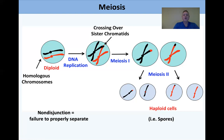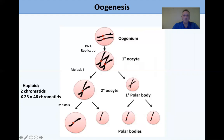Non-disjunction events are due to a failure to properly separate chromosomes. As a consequence, some cells at the end may have more chromosomes than others. Whenever you don't have the proper number of chromosomes, you're said to be aneuploid, because we're normally euploid.